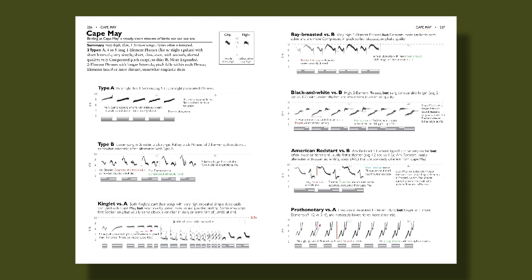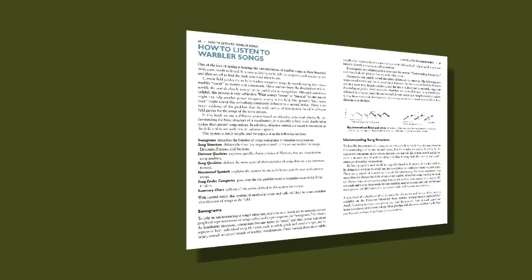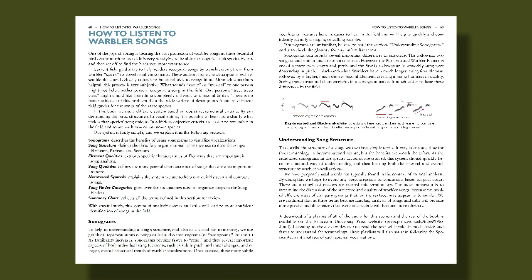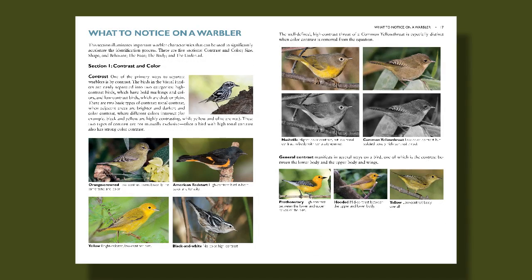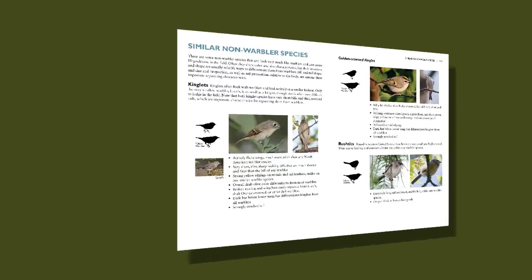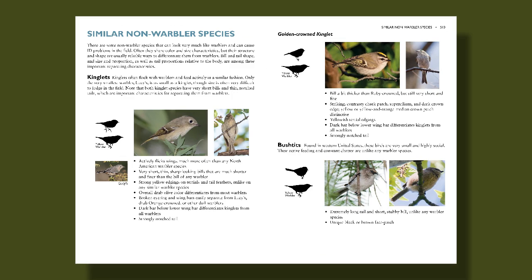We've also included a number of supporting chapters in The Warbler Guide. At the beginning of our book, we have several introductory chapters to go over important information about how to learn vocalizations, how to look at sonograms, and how to look more closely at warbler plumage and shape. Towards the end of the book, we also include useful chapters such as non-warbler species, which outlines other types of birds that might be confused with warblers.